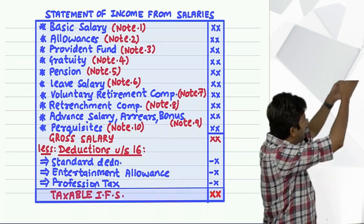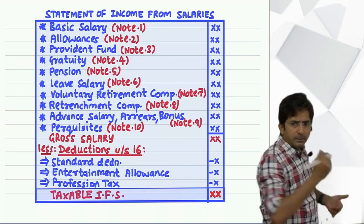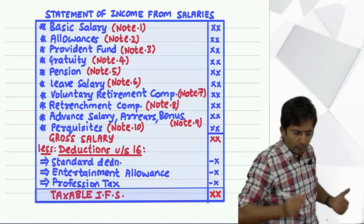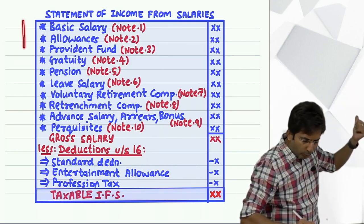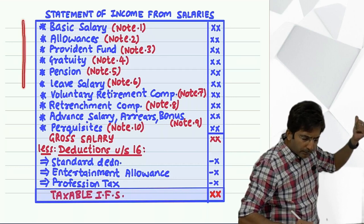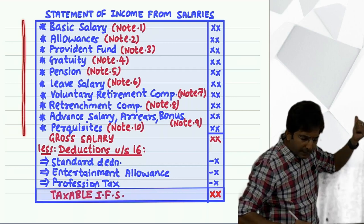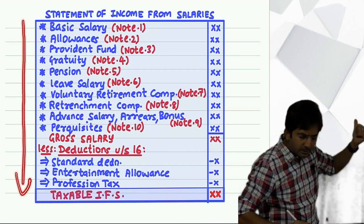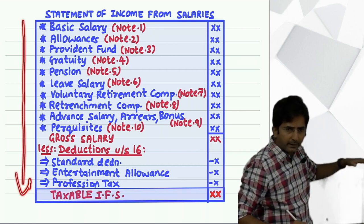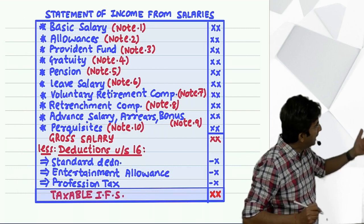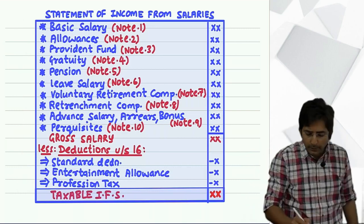There are 10 notes and the chapter is over. Like the last topic, in this chapter also there is a deduction, but here it is deduction under section 16. I will start from the top to bottom, and once I reach the end, the chapter is over.